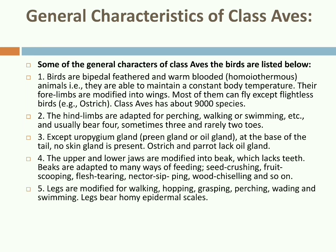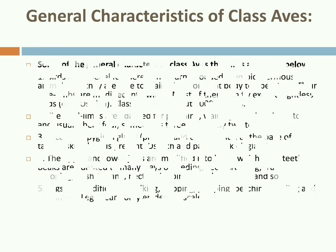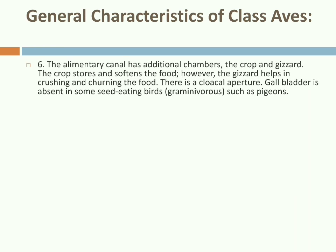Legs are modified for walking, hopping, grasping, perching, wading, and swimming. Legs bear horny epidermal scales. The alimentary canal has additional chambers called crop and gizzard. The esophagus is enlarged into crop, and the stomach is divided into glandular proventriculus and muscular gizzard. The crop stores and softens the food, while the gizzard helps in crushing and churning the food. There is a cloacal aperture. Gall bladder is absent in some seed-eating birds such as pigeons.